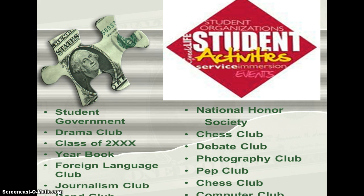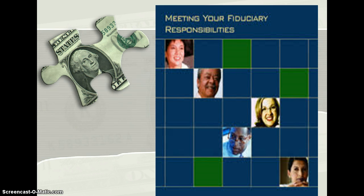Such organizations include Student Government, Drama Club, National Honor Society, and various clubs. State statutes authorize a school district treasurer to receive monies raised in these extracurricular activities. The district is responsible for maintaining records and properly accounting for the activity of these Internal Services Funds, or 200 accounts.